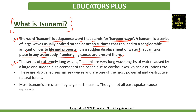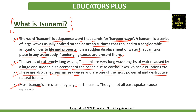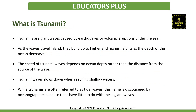Tsunamis are series of extremely long waves with very long wavelengths. They are caused by large and sudden displacement of the ocean due to earthquakes or volcanic eruptions. These are also called seismic sea waves and are one of the most powerful and destructive natural forces. Tsunamis are caused by large earthquakes, though not all earthquakes cause tsunamis.